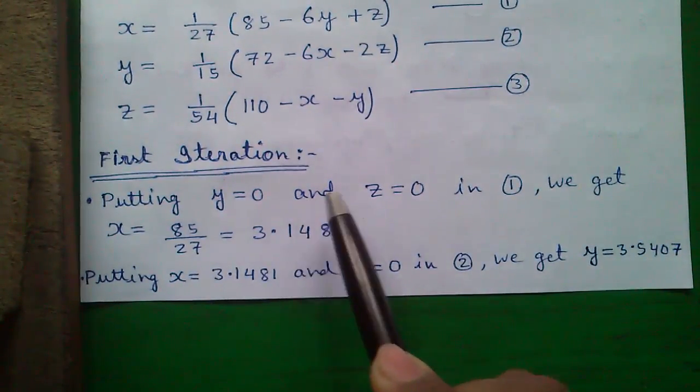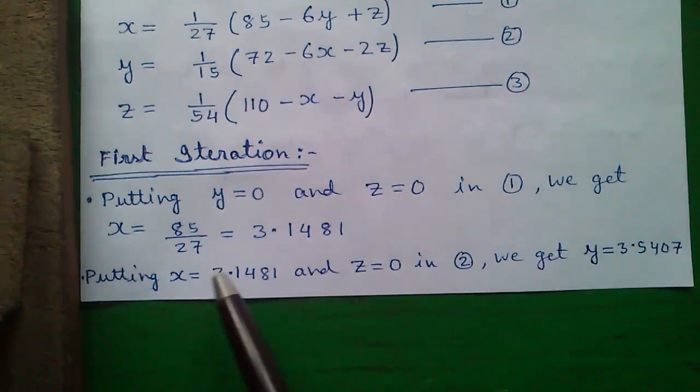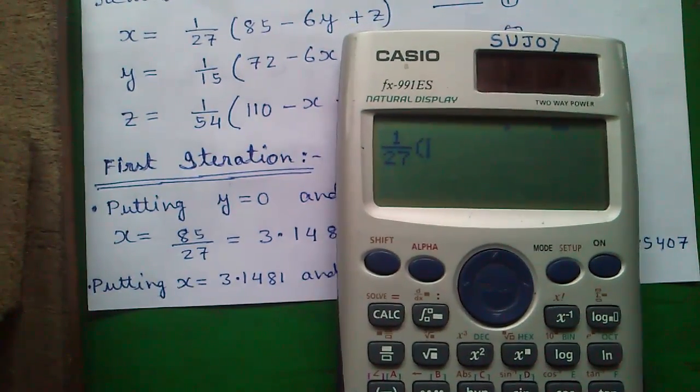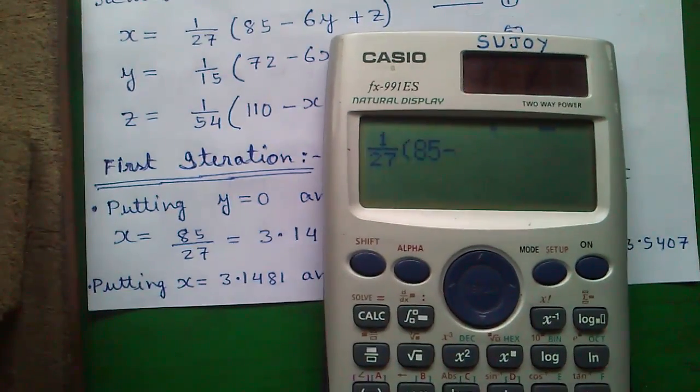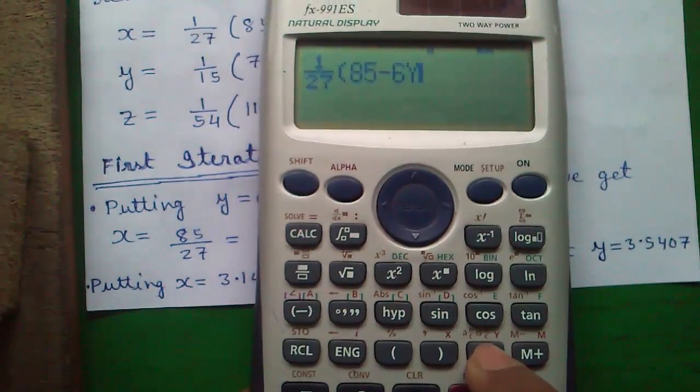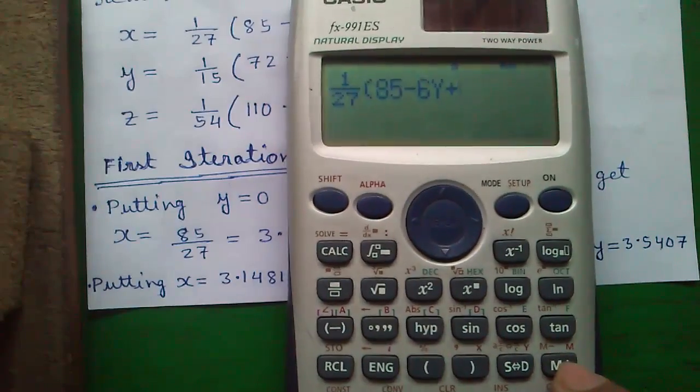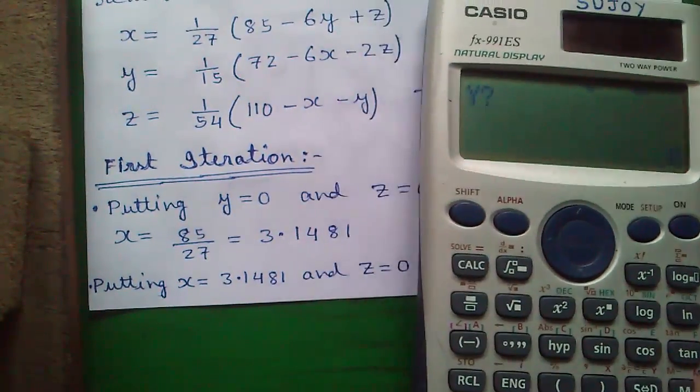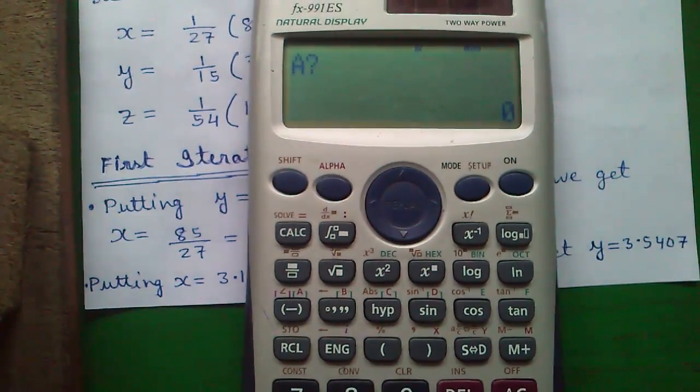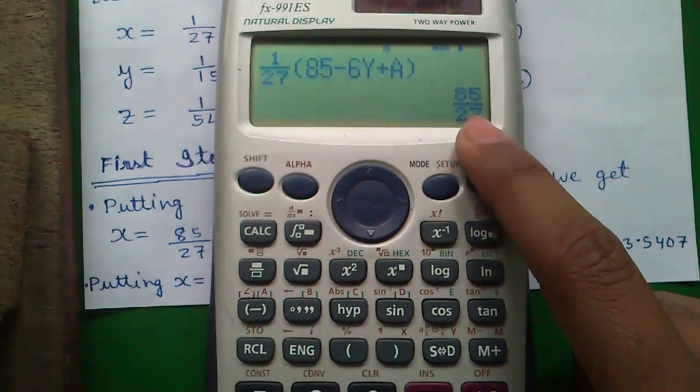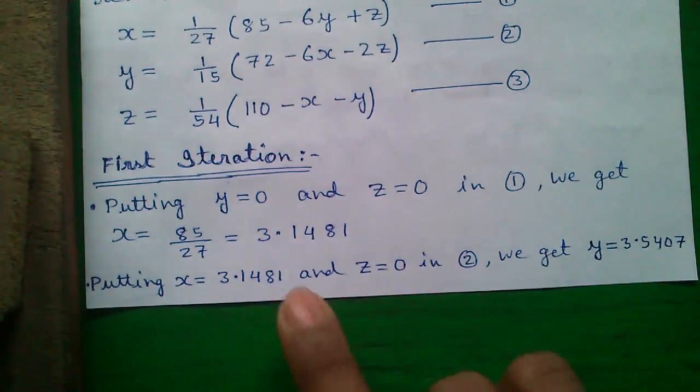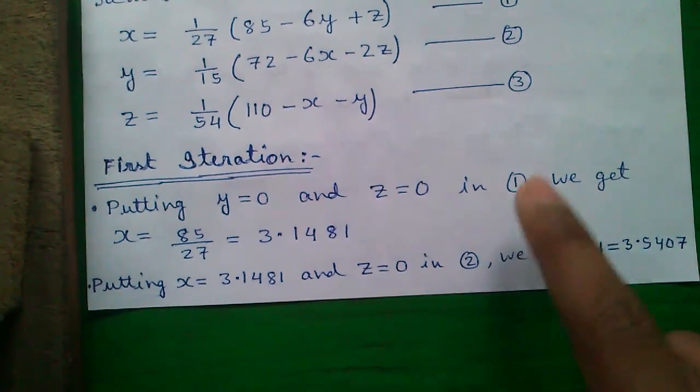So our first iteration, putting y equals 0 and z equals 0 in equation 1, you will get x equals 85 by 27 equals 3.1481. How? I will show you. Enter the expression into your calculator. Press the fraction button, 1 by 27 into 85 minus 6y. For y press alpha and s to d button, plus z. For z press alpha and minus button for a, and press the calc button.